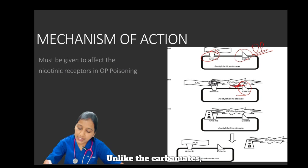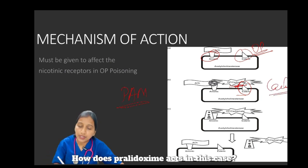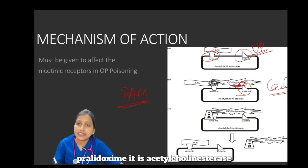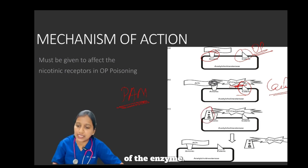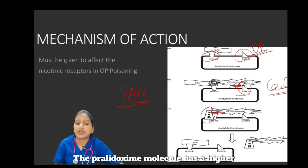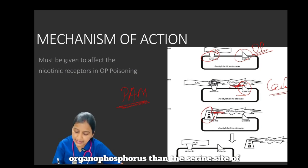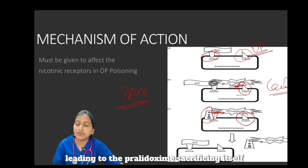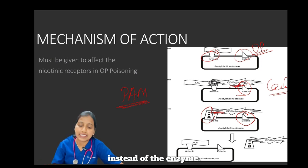Unlike carbamates, this interaction is irreversible. How does pralidoxime act in this case? Pralidoxime is an acetylcholinesterase enzyme reactivator. It works by attaching to the anionic site of the enzyme. At this site, pralidoxime is very close to the organophosphorus compound. The pralidoxime molecule has a higher affinity to become phosphorylated with organophosphorus than the serine site of the enzyme.